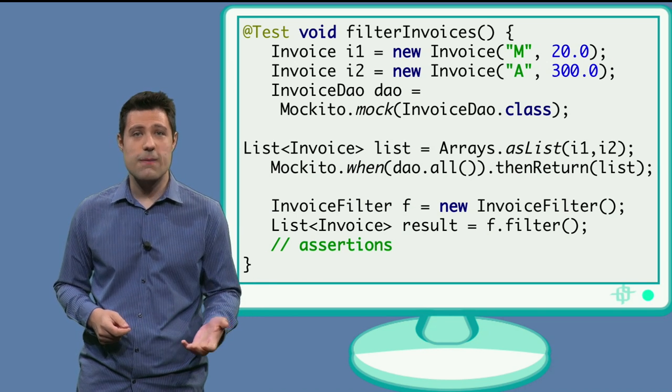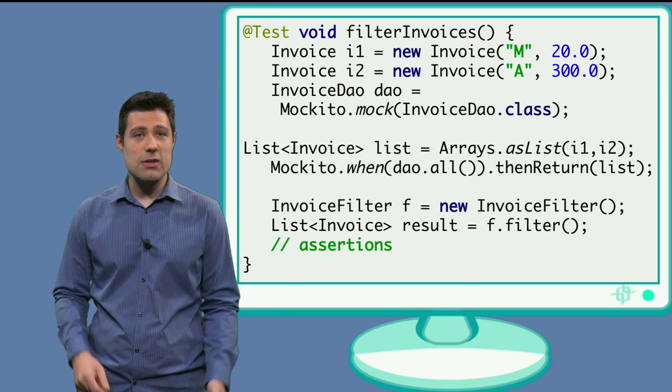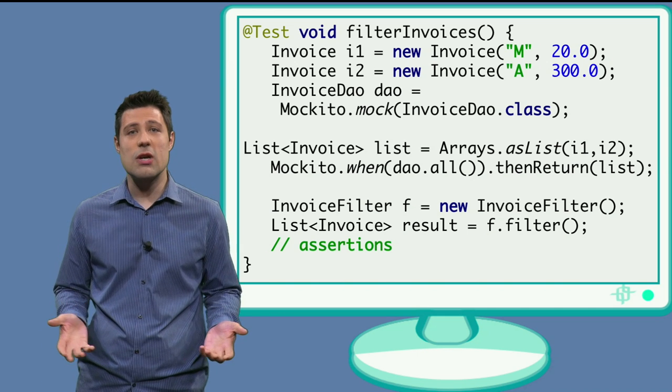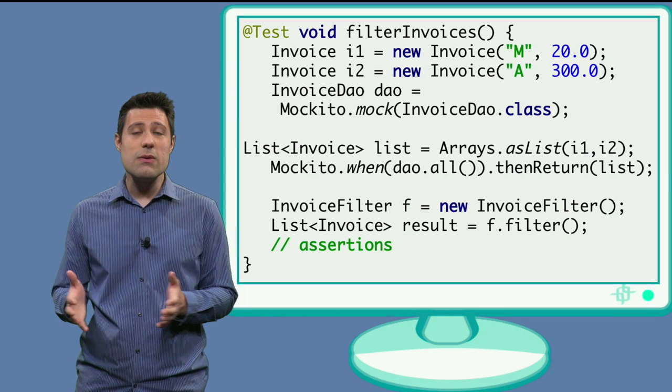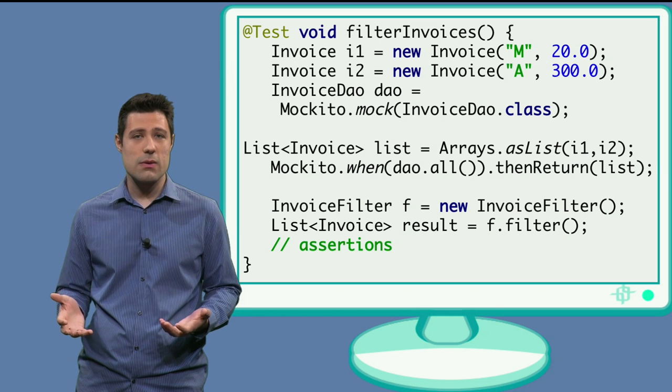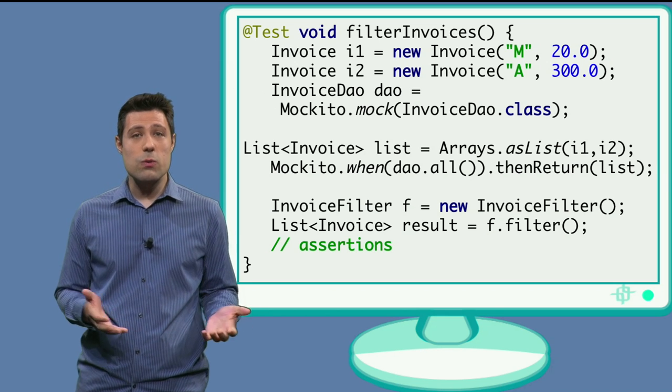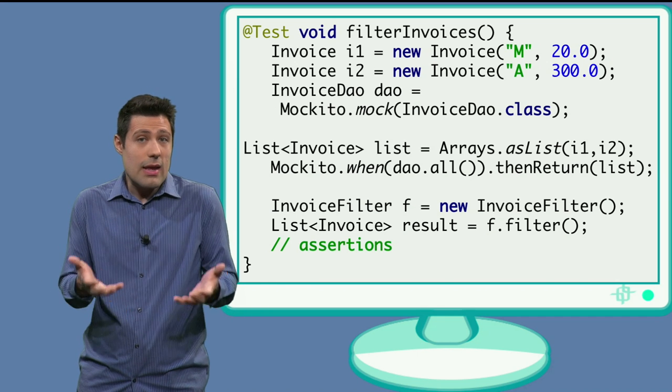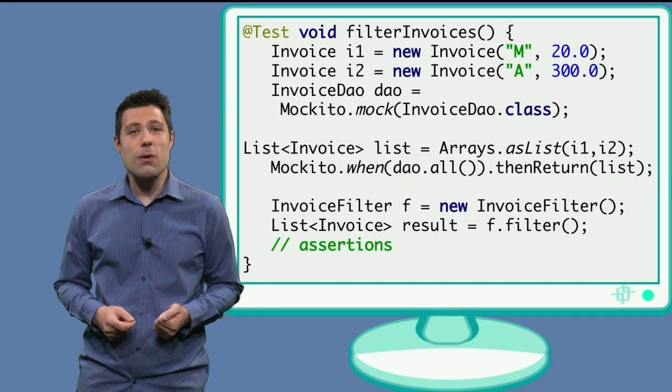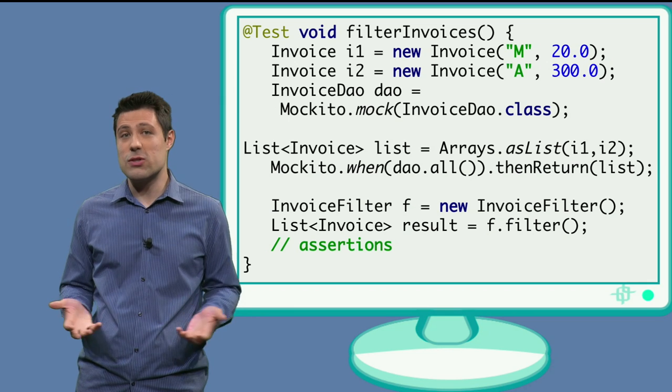So that's what we do here. We create an array using the arrays.asList method from Java. And we add the two invoices, i1 and i2. And then we use Mockito.when method. And when the all method happens in this mock object, then returns this list that we just created in memory.